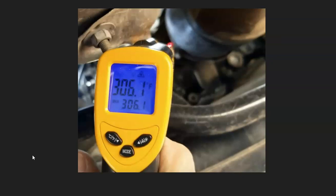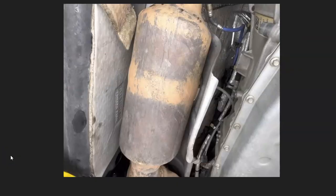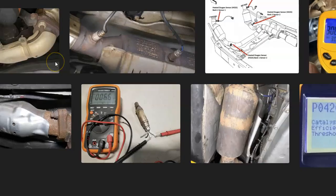Many mechanics will use an infrared thermometer to check the temperature before and after the catalytic converter — if it's hotter before, they know it's clogged. Some mechanics will bust loose the bolts right before it and open it up about half an inch so air can escape easier, then drive the vehicle around the block; if it has more power, they know the catalytic converter is clogged. Ultimately, if there are no engine problems and no other codes, either one of the oxygen sensors has failed or the catalytic converter has failed.